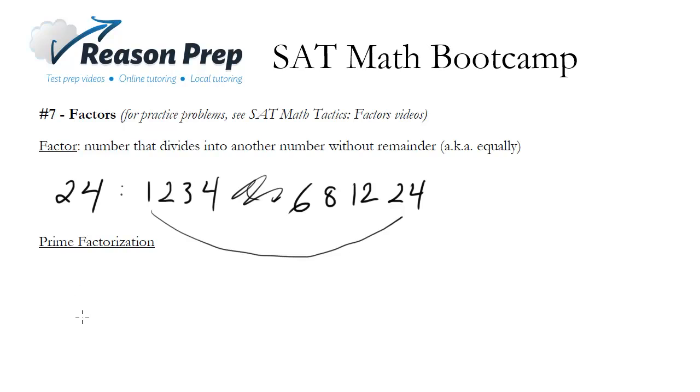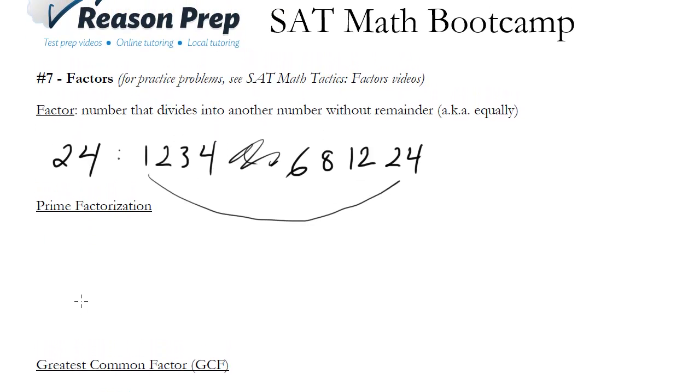Another kind of factoring is prime factorization. Basically it's finding the basic constituents of a number as prime numbers. A prime number, we'll talk about in a little bit, is a number that only is divisible by 1 and itself. So we want to break a number down into those basic parts that we can't break it down anymore.